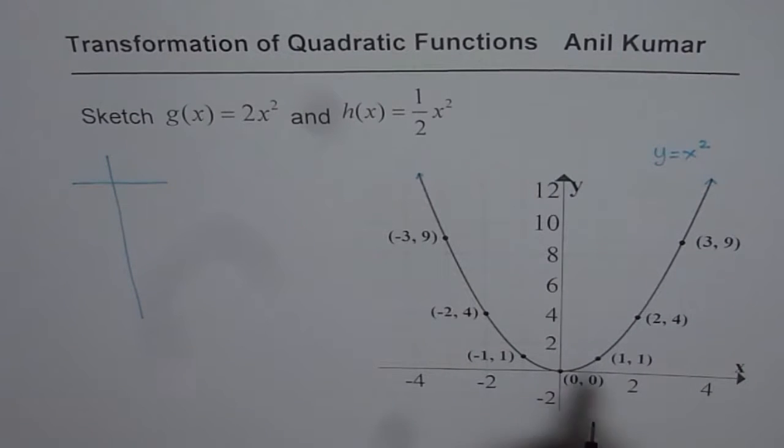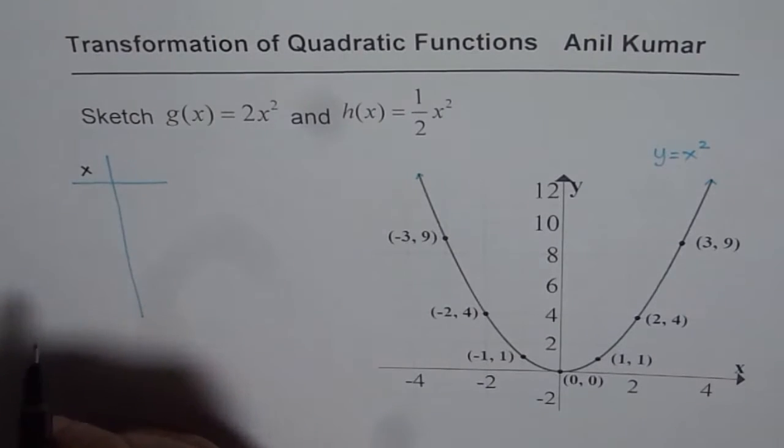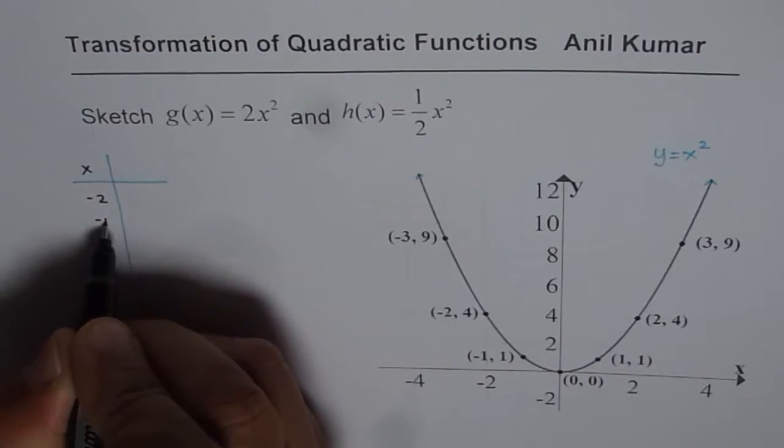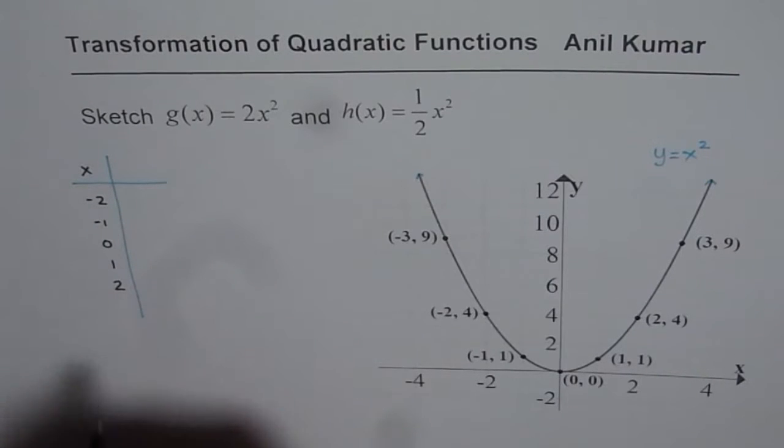For a parabola the key values for x are, let me write on this side, left side, minus 2, minus 1, 0, 1 and 2. So these will give us five coordinate points.